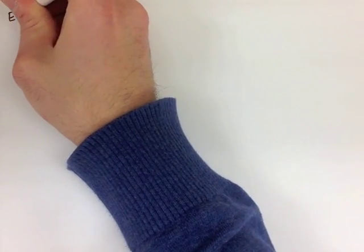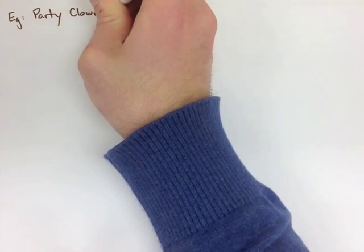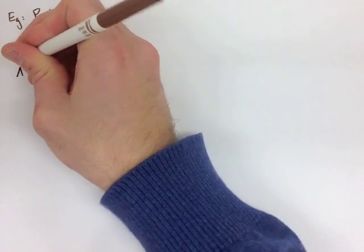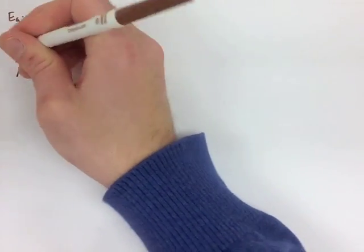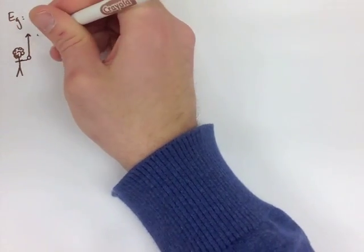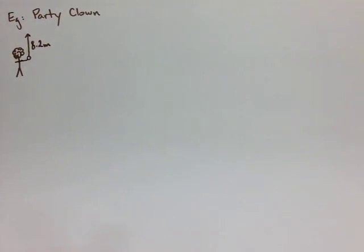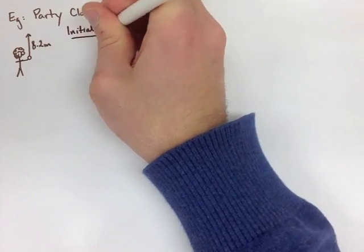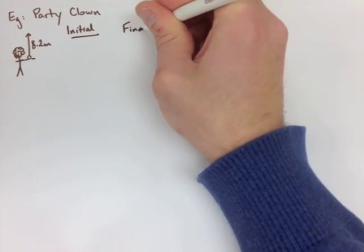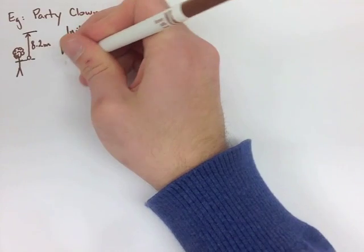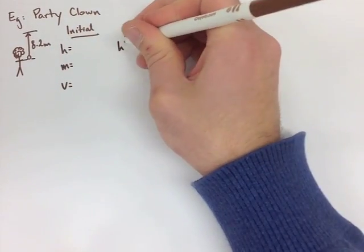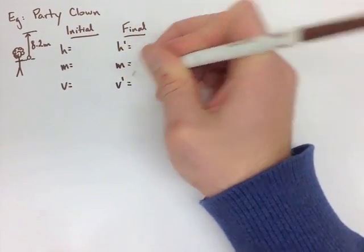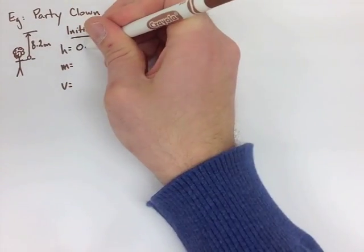We're now going to look at the first two examples on the next page. In the first example, we have a clown throwing a ball 8.2 meters in the air. To solve this question, we're going to set up what are called HMV charts, where we represent our initial and final values in these charts, talking about our height, our mass, and our velocity. Sometimes the mass won't influence, but sometimes it will.